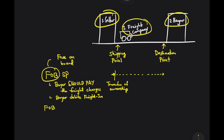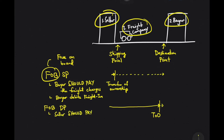How about FOB destination point? If that's the term, it means the transportation is free or paid by the seller from the seller's place to the destination point. The small distance from the destination point to the buyer's place is shouldered by the buyer, because it is at that point where the transfer of ownership happens. The implication is the seller should be the one to pay the transportation cost or the freight charges. Journal entry wise, the seller debits freight out.